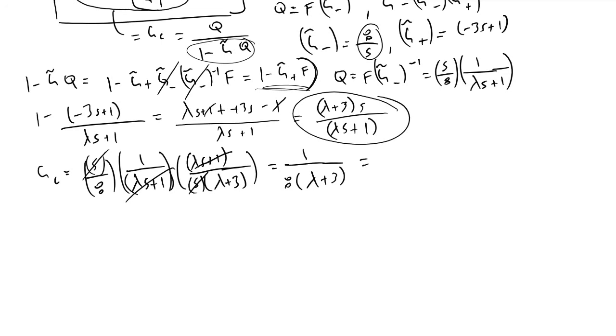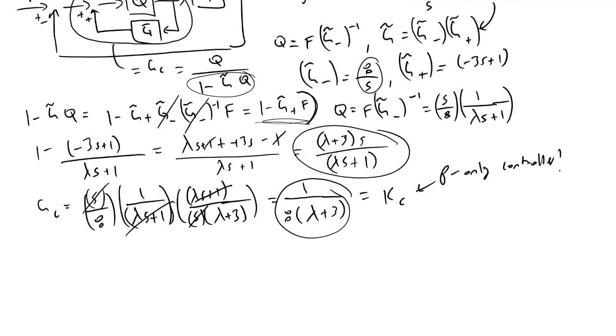And what you'll note about this is every term in this equation is a constant value. So this is equal to your controller gain KC, which is for a P only controller.